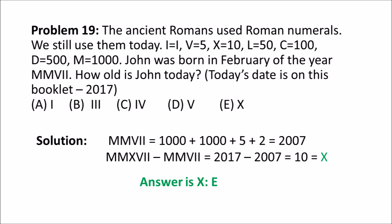MMVII equals 1000 plus 1000 plus 5 plus 2, which is equal to 2007. MMXVII minus MMVII equals 2017 minus 2007, which equals 10, which in Roman numerals equals X. Therefore, the answer is X, which is E.